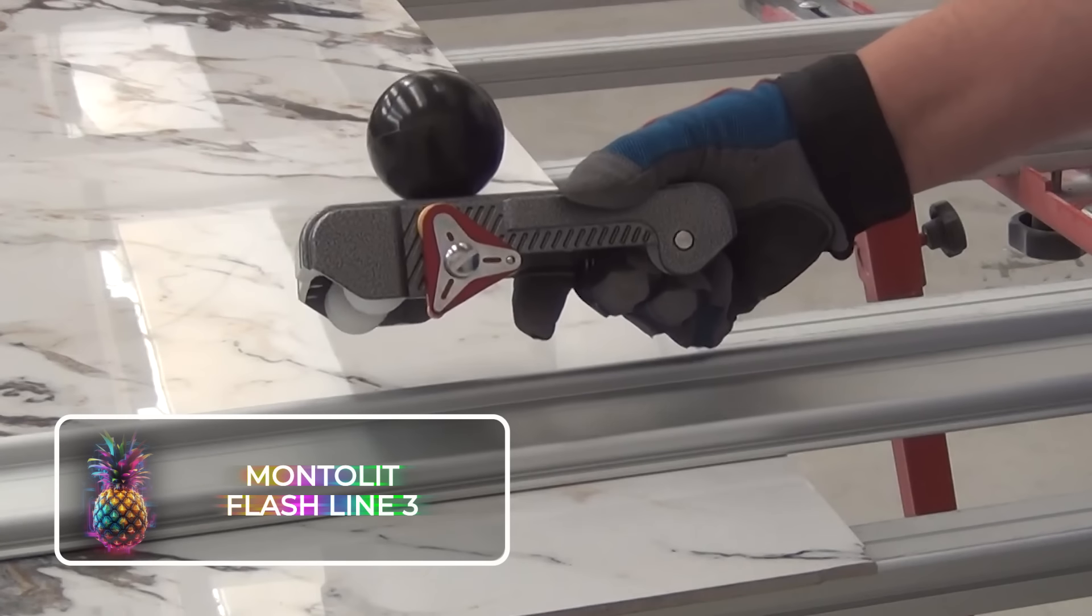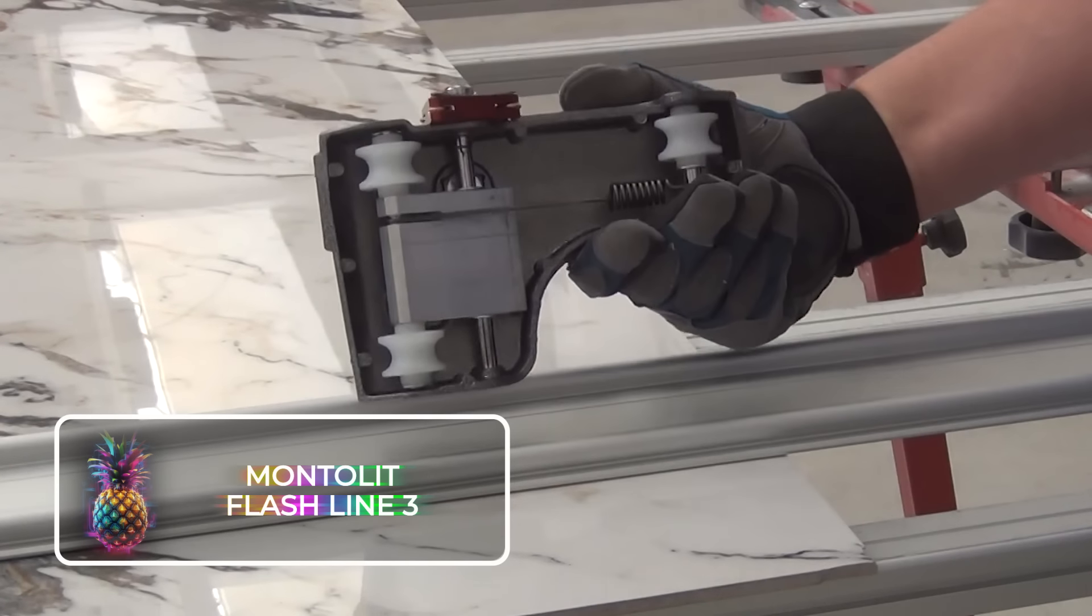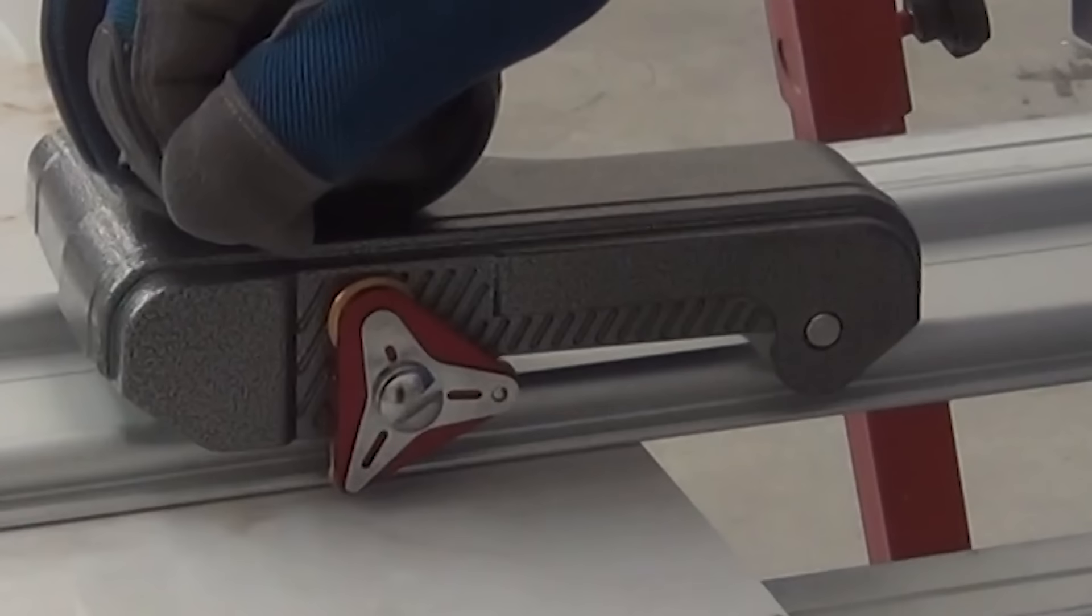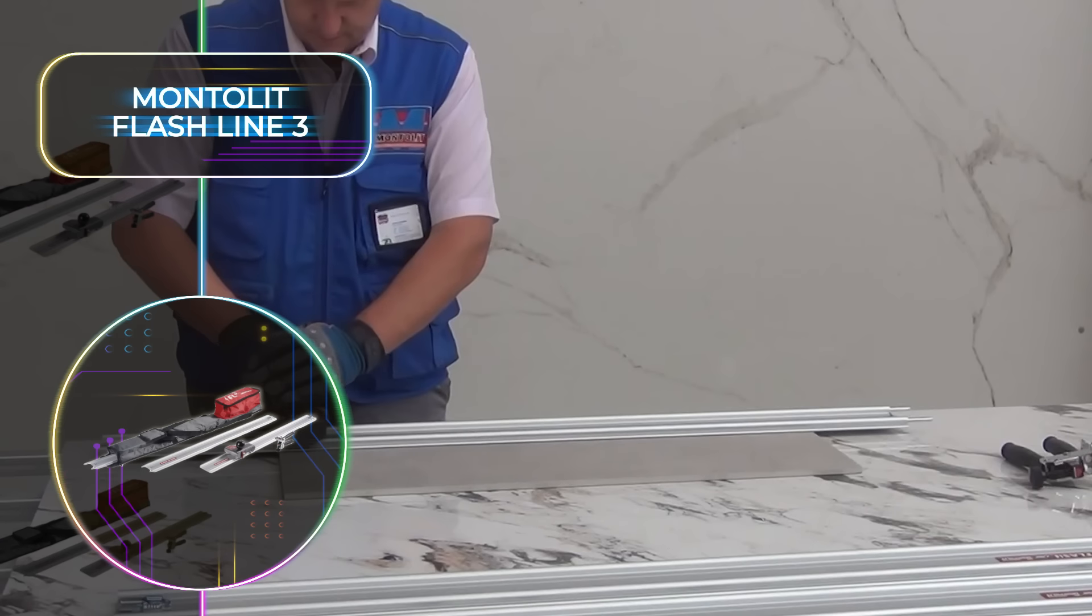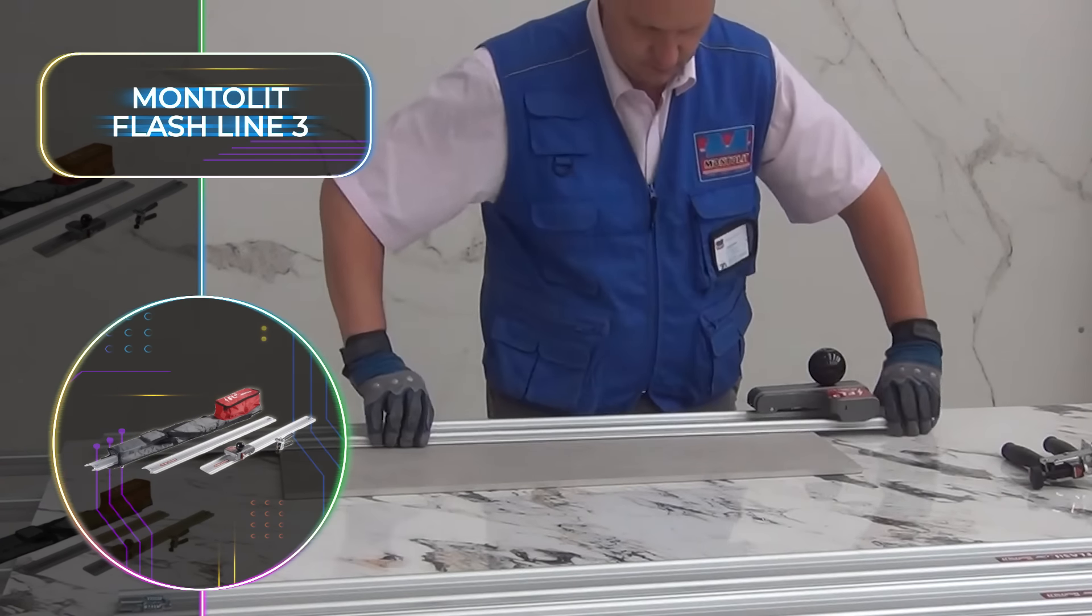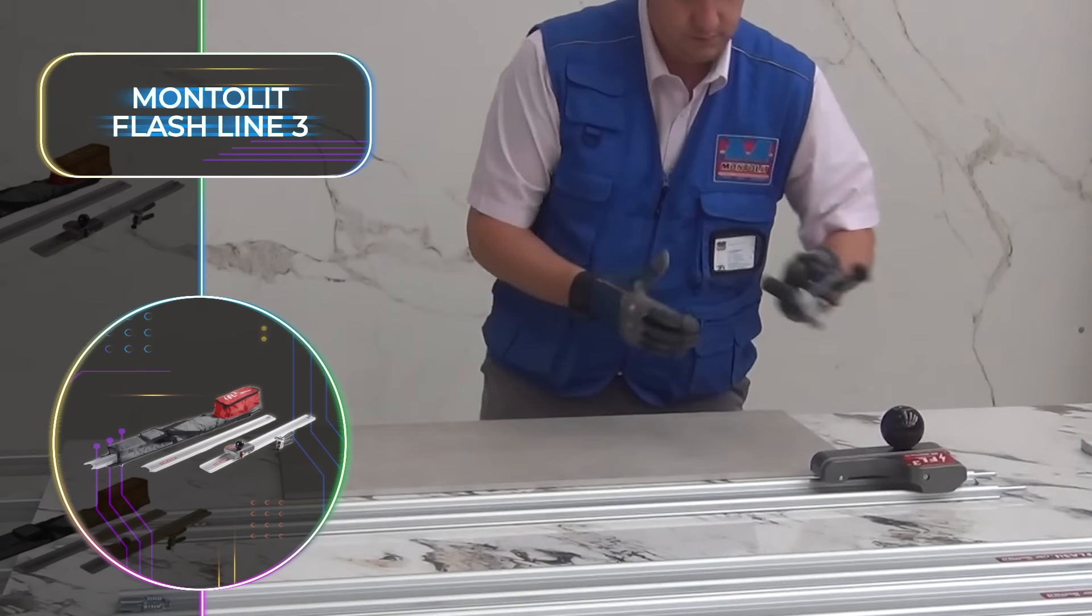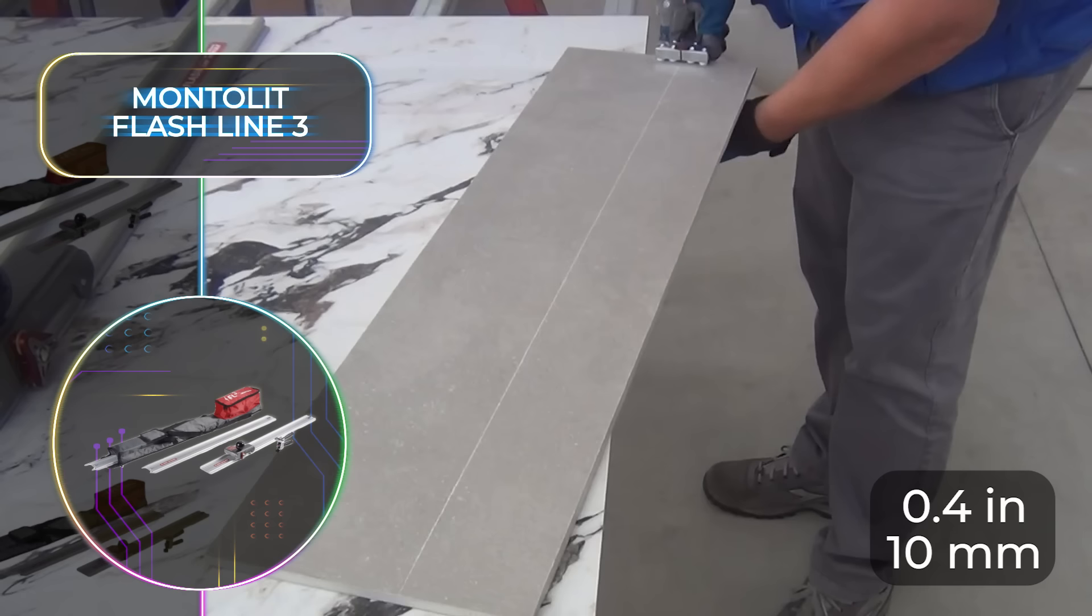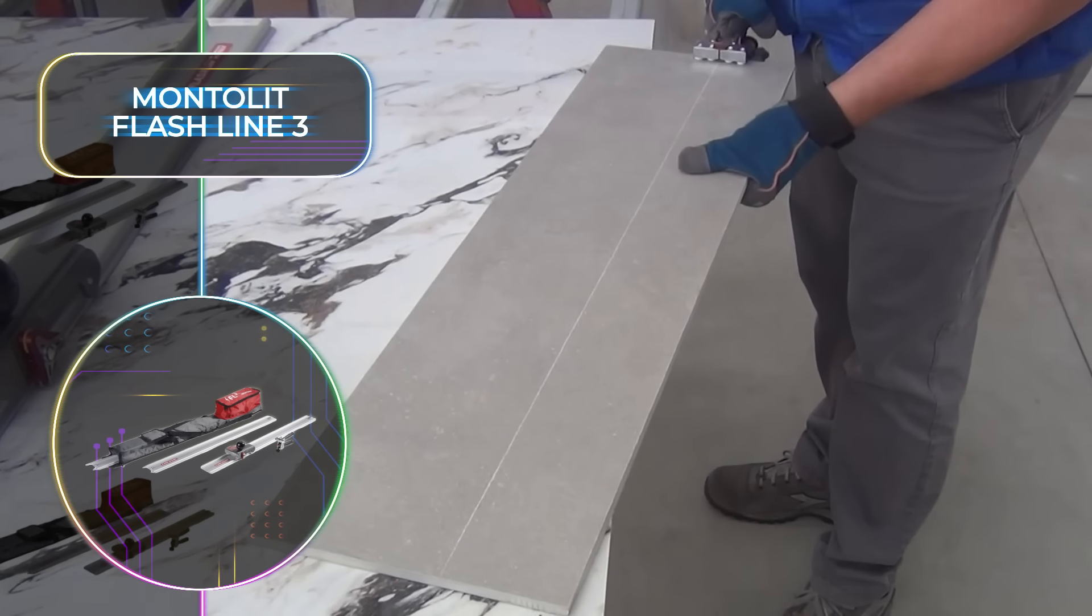Montolit Flashline 3. Here we have another deceptively basic-looking Italian-made gadget that will probably transform the way you work and take almost all the hassle out of tile cutting. With its patented technology, this mechanical tile cutter is designed to be used in solo projects and can effortlessly handle porcelain slabs up to 0.4 inches or 10 millimeters thick.